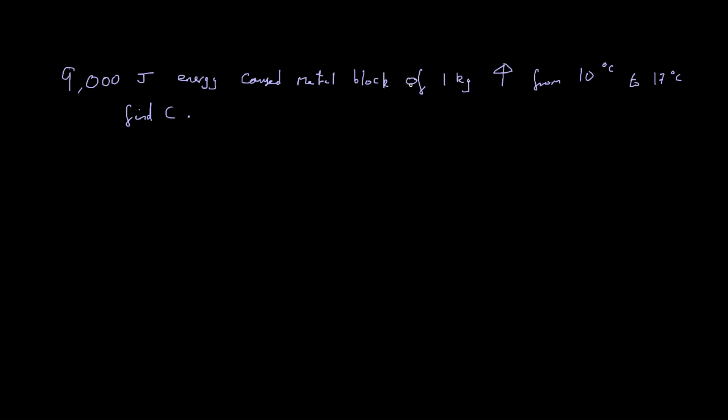Okay. So this equals a metal block of 1 kilogram, so the block weighs 1 kilo, to increase from 10 degrees Celsius to 17 degrees Celsius. Now we need to find our specific heat capacity. So again, I'm going to fill in all of the information using our equation. So E is equal to MC theta. Now we already know our energy. So we know that 9,000 is equal to... Do we know our mass? We do. We're told it's 1 kilo block.